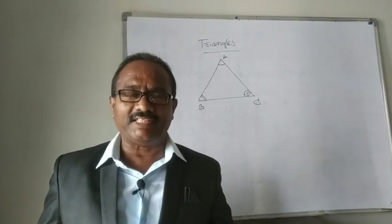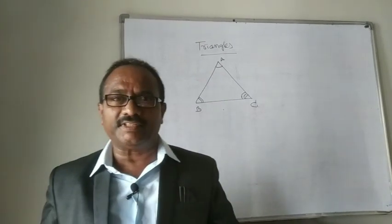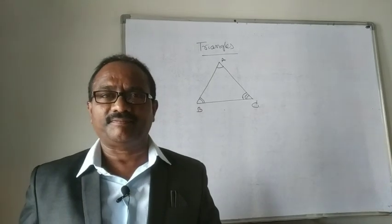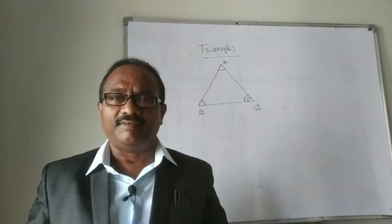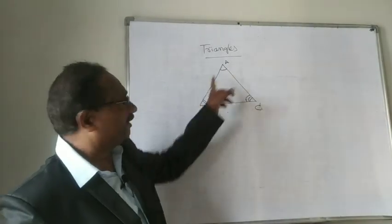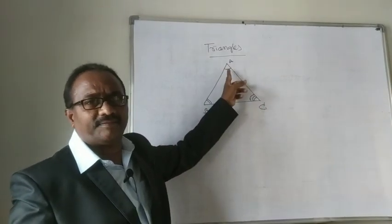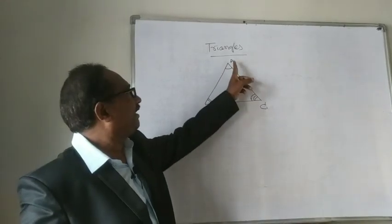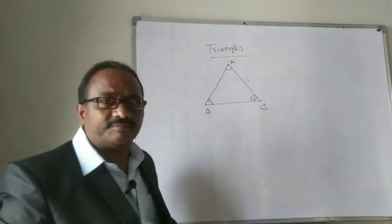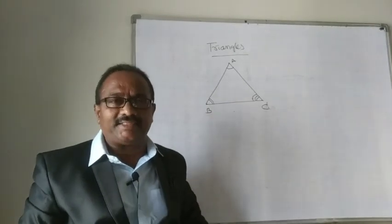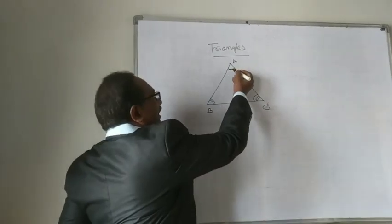Hello, I am Vithal Rajakonda, mathematician from FutureMinds Namdevada Nizamabad. Today we are going to discuss the topic triangles. First of all, what is a triangle? A triangle is a closed figure which has three lines. Like triangle ABC, where AB, BC, CA are called sides and A, B, C are the vertices of the triangle.